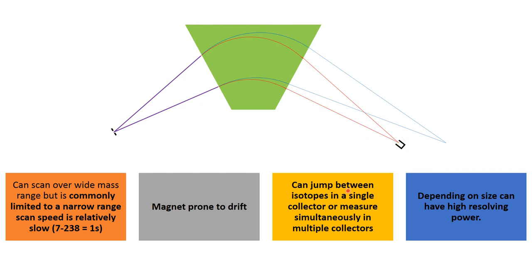We can measure many different isotopes by jumping each isotope in turn into one collector, or with multiple collectors we can collect them simultaneously — though the number of collectors limits how many can be measured at once; you can't measure all 92 elements in one go. A notable advantage of a magnetic sector is that it can resolve very small differences in mass. For example, nitrous oxide may appear to have the same mass (31) as phosphorus, but they're not exactly the same, and a magnetic sector can sometimes resolve those small differences.